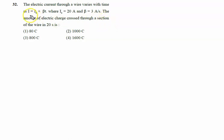The electric current through a wire varies with time. Current is not constant, it is varying with time, that is I equal to I0 plus beta t. I0 is 20, beta is 3. So current is given by, in place of I0 we will write 20 plus beta is 3 into t.